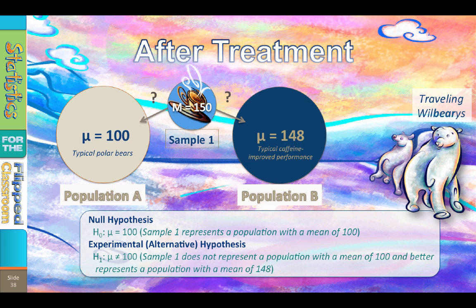The experimental or alternative hypothesis states that sample 1 does not represent a population with a mean of 100, and better represents a population with a mean of 148. We would write that as H sub 1: mu does not equal 100. To answer our research question, we could calculate the probability that sample 1 represents each of the two populations — 100 and 148 — and then go with the higher probability, the one that is more likely.